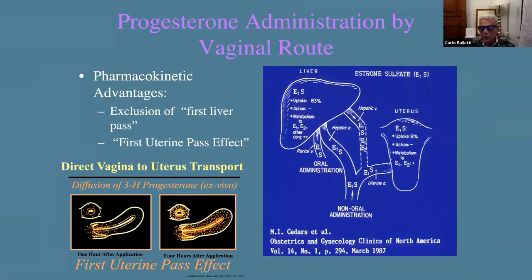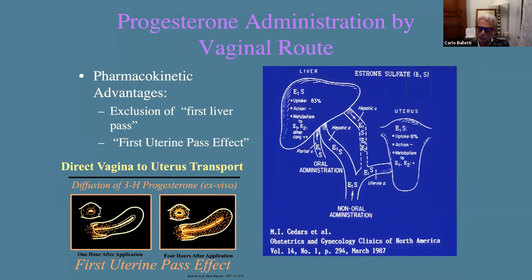Also, when we administer an oral steroid — not only progesterone, even estrogen — it enters the portal vein and the liver, which extracts about 80% of the steroid by sulfur conjugation. What remained comes out through the hepatic vein. When we give progesterone or other steroids in non-oral administration — intramuscular, transvaginal, whatever — it enters through the hepatic artery, contemporary to the uterine artery. So it goes to the uterus first, and then to the liver to be catabolized as sulfur conjugated.